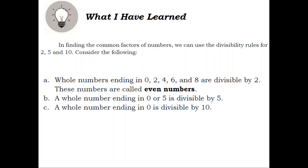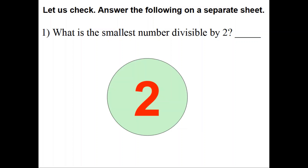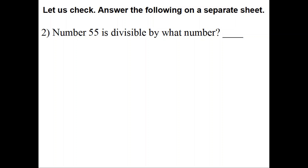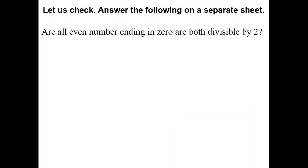What I Have Learned. In finding the common factors of numbers, we can use the divisibility rules for 2, 5, and 10. Consider the following: A. Whole numbers ending in 0, 2, 4, 6, and 8 are divisible by 2. These numbers are called even numbers. B. A whole number ending in 0 or 5 is divisible by 5. C. A whole number ending in 0 is divisible by 10. Let us check. Number 1: What is the smallest number divisible by 2? Answer: 2. Number 2: Number 55 is divisible by what number? Answer: 5. Number 3: What is the biggest two-digit number divisible by 10? Answer: 90. Number 4: Are all even numbers ending in 0 both divisible by 2? Answer: yes.